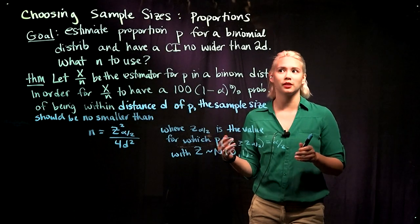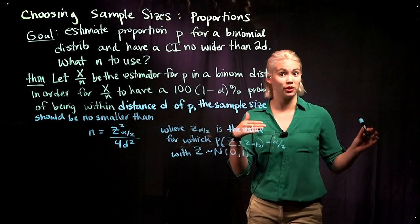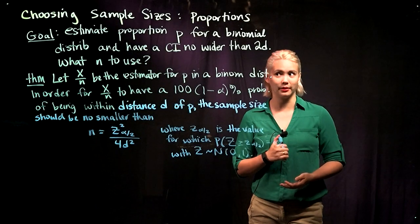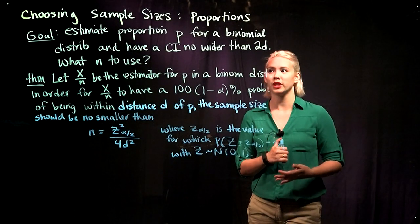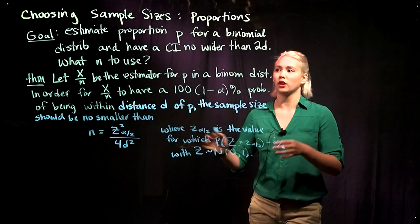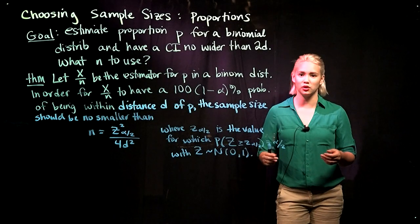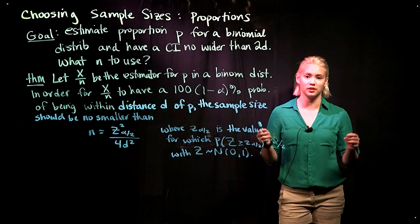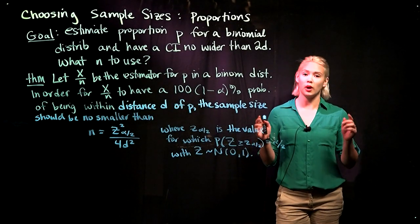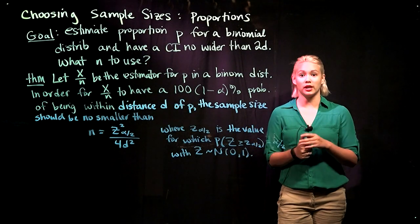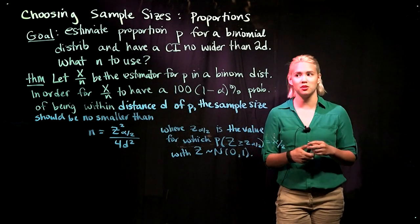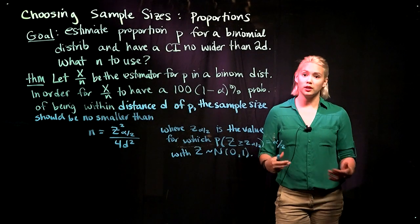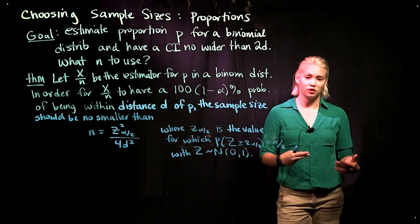In this video, in particular, we'll be talking about proportions. Later, we'll talk about confidence intervals for a mean. Our goal is to have a confidence interval that's no wider than 2D, and we're trying to estimate a proportion P from a binomial distribution. We're trying to figure out what sample size we should use.